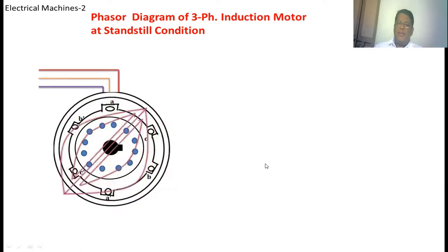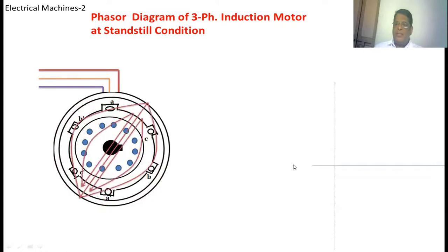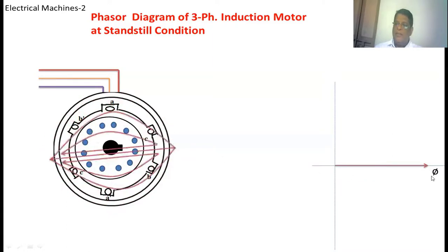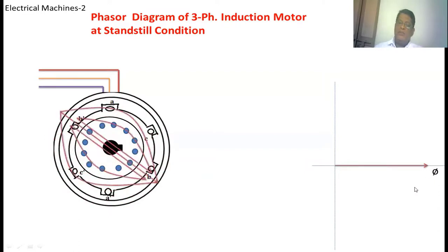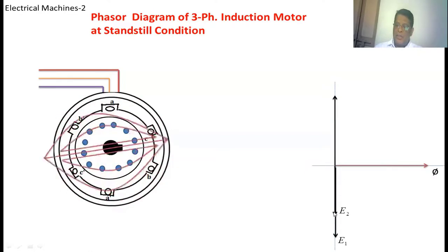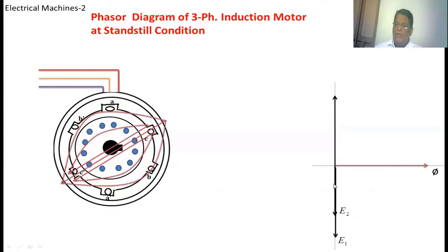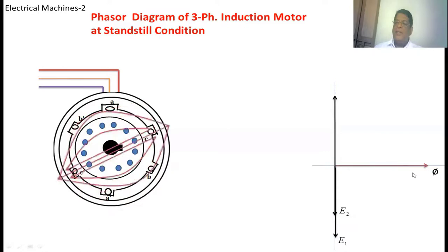When drawing the phasor diagram, we initially take the x-axis and y-axis. The flux is taken on the x-axis, represented as phi — this is the rotating flux. Because of this flux, voltages are induced in both the stator and rotor windings — these are E2 and E1 respectively. All vectors rotate in an anti-clockwise direction. The angle between the flux and E1 and E2 is 90 degrees; this voltage lags the flux by 90 degrees.